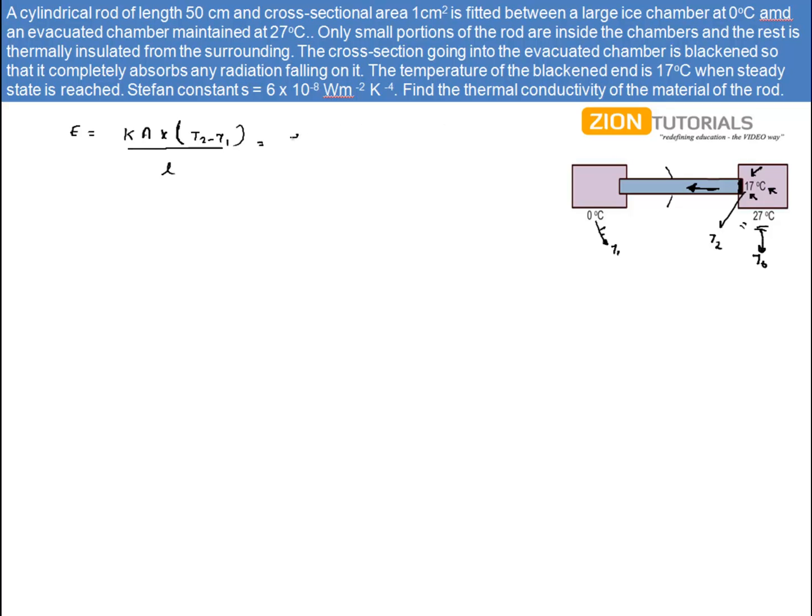So it is given by emissivity times area of cross-section times sigma times (T₀ to the power 4 minus T₂ to the power 4).